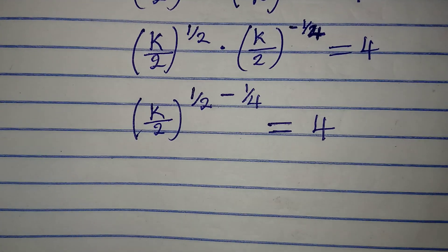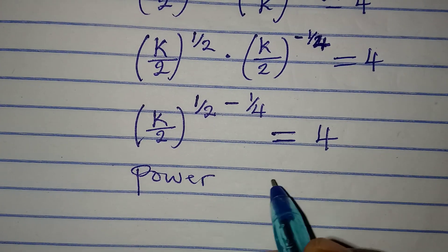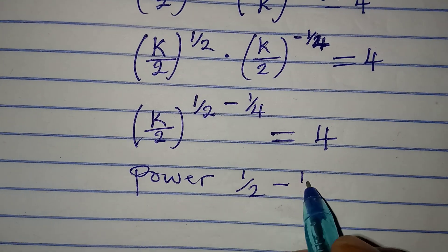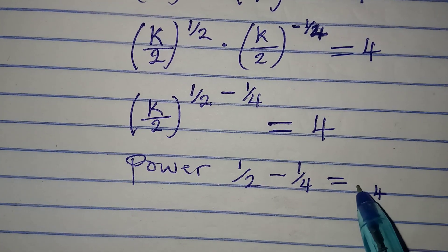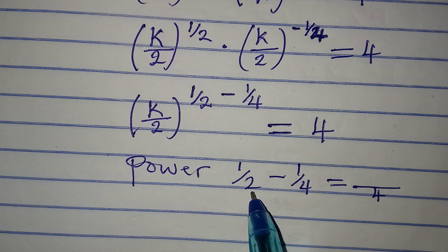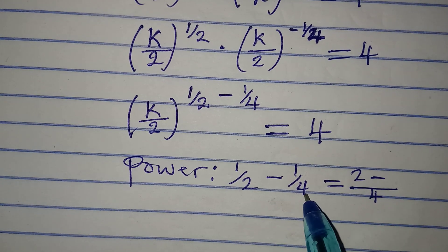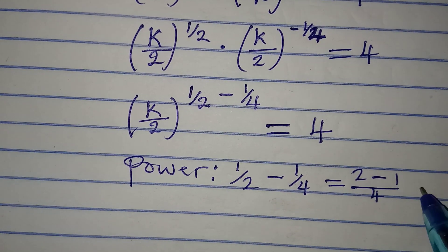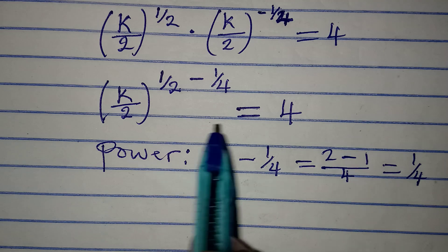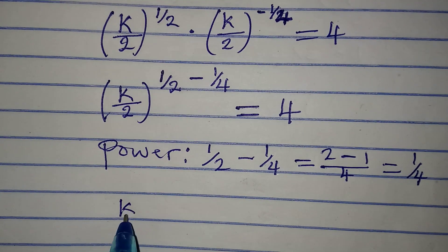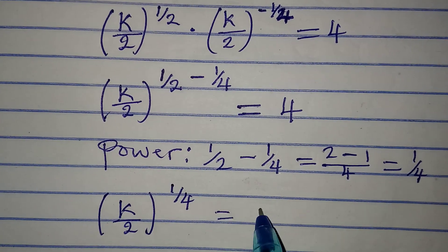Now, I'm going to add the powers. The power is 1 over 2 minus 1 over 4. I want to deal with the power first. The LCM of this power is 4. 4 divided by 2 is 2, times 1 is 2. We have 2 minus 1, which gives us 1 over 4 as the power. Fixing the power back in, I have k over 2 to the power of 1 over 4 equal to 4.